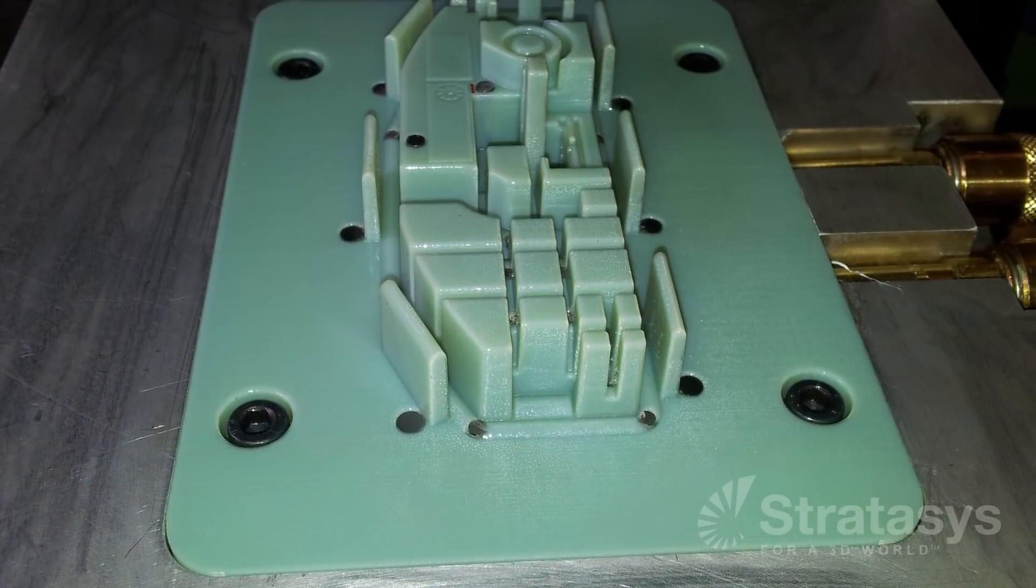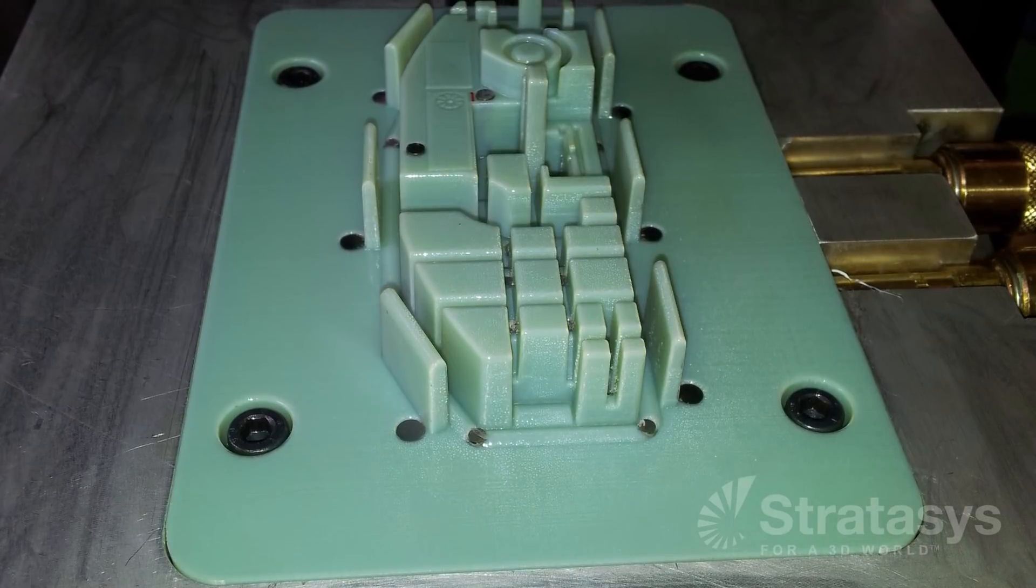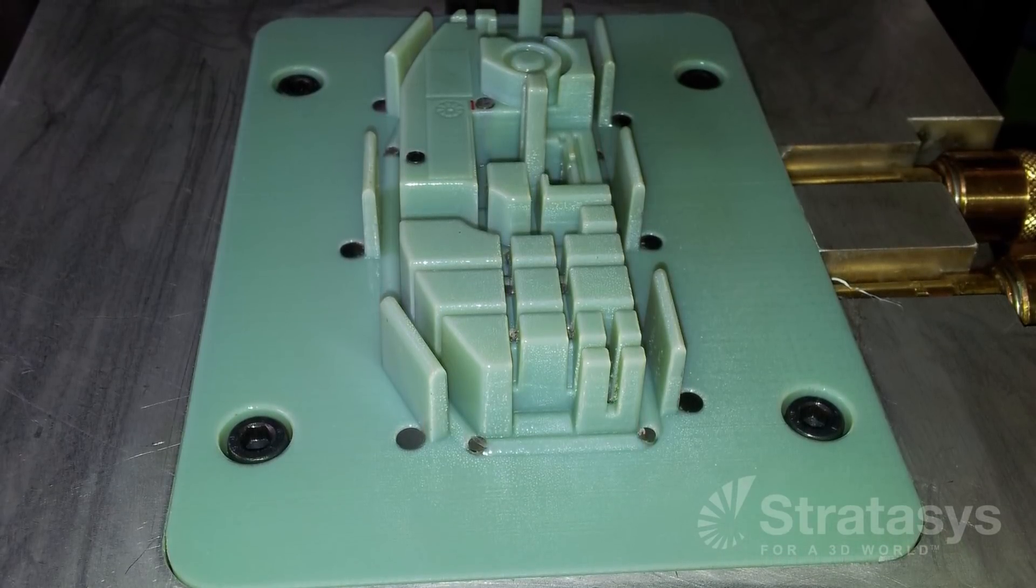As an alternative to machine soft tooling, PolyJet reduces mold making time and cost by 50 to 70 percent.